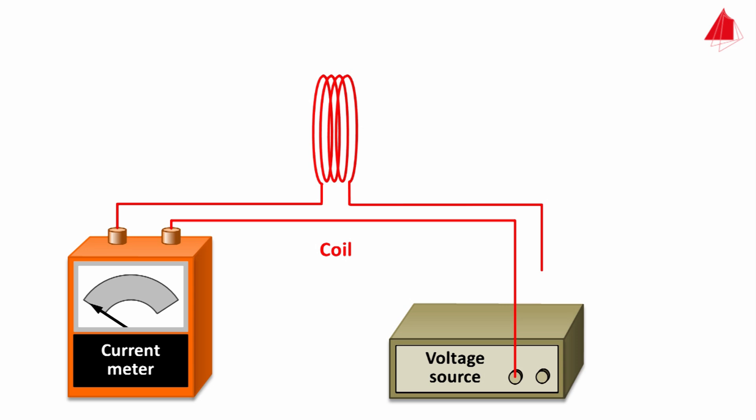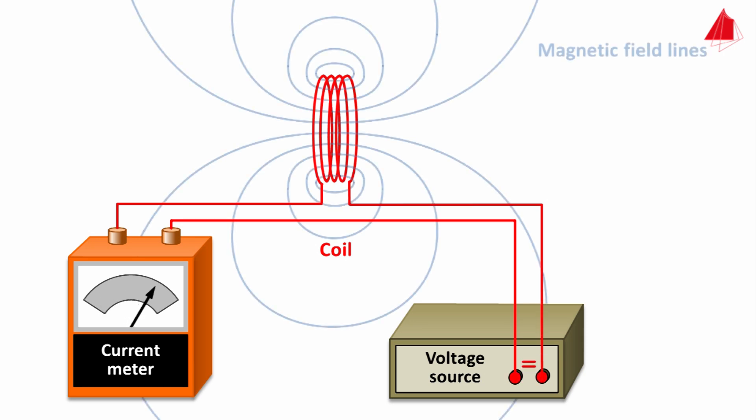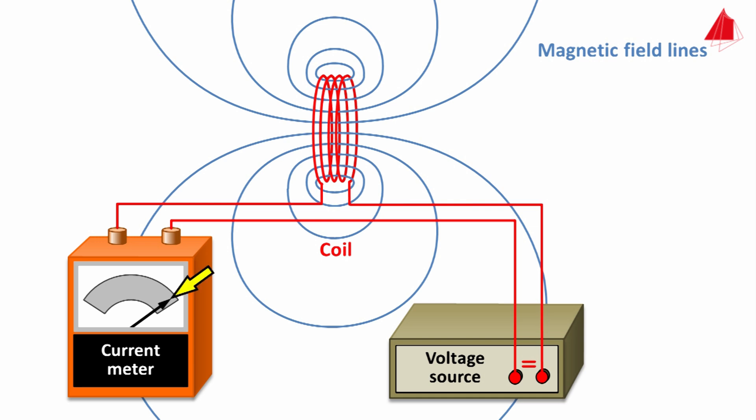The animation shows a coil which can be connected via an electric current meter to a voltage source. After applying a direct voltage to the coil, the electric current first increases fairly quickly, then more slowly, according to the inductance of the coil. Eventually it reaches a level resulting only from the ohmic resistance of the coil. The current creates magnetic fields that flow around every small piece of coil winding, and the individual fields superimpose to form the total magnetic field depicted here in blue.